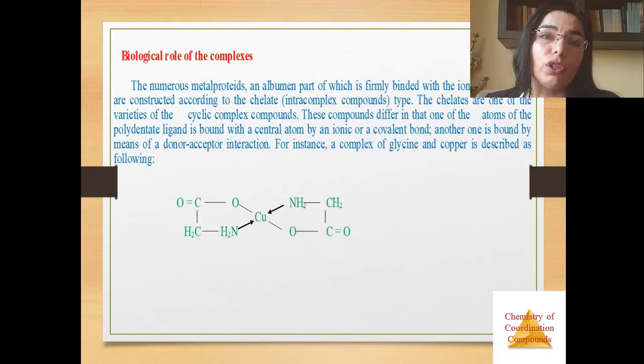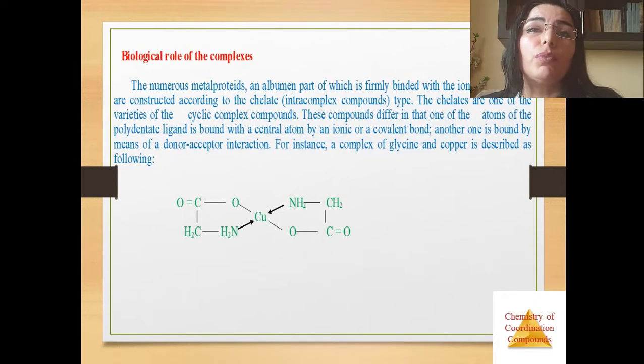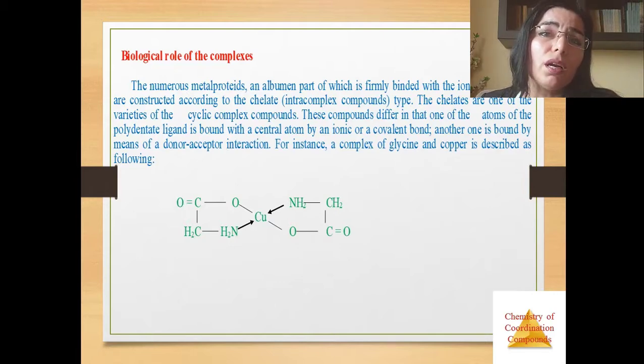Now about biological role of the complexes. Numerous metalloproteins, an albumin part of which is firmly bonded with the ions of the metals, are constructed according to the chelate intracomplex compounds type. The chelates are one of the varieties of the cyclic complex compounds. These compounds differ in that one of the atoms of the polydentate ligand is bound with a central atom by an ionic or covalent bond. Another one is bound by means of a donor-acceptor interaction. For instance, a complex of glycine and copper is described as following.